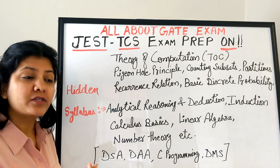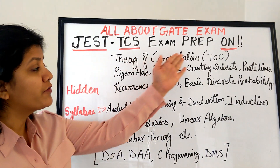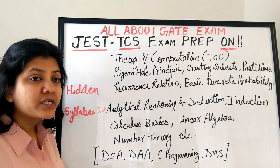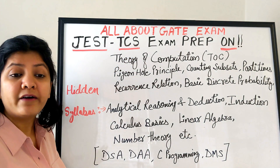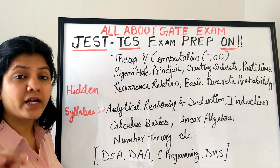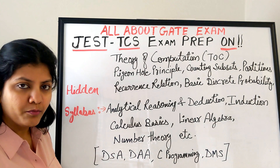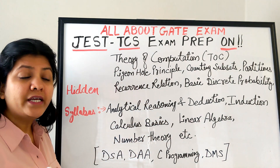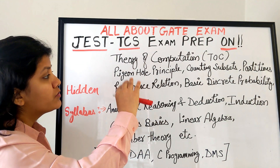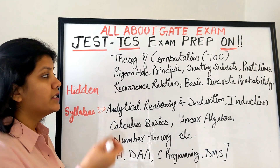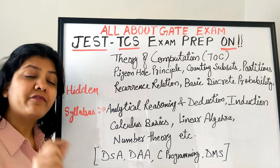Now here comes the hidden syllabus. Theory of computation is not mentioned on the website at all, but you will see objective questions and one or two subjective questions from it — for example, designing automata. Theory of computation cannot be ignored. Pigeonhole principle, counting, subsets, partitions, and recurrence relations are also very important and are part of combinatorics, though I list them separately since students often think combinatorics only means permutations and combinations.